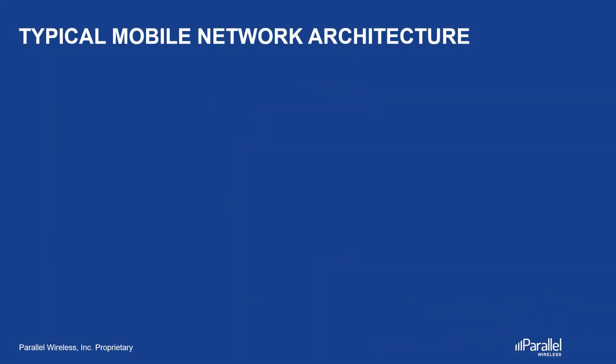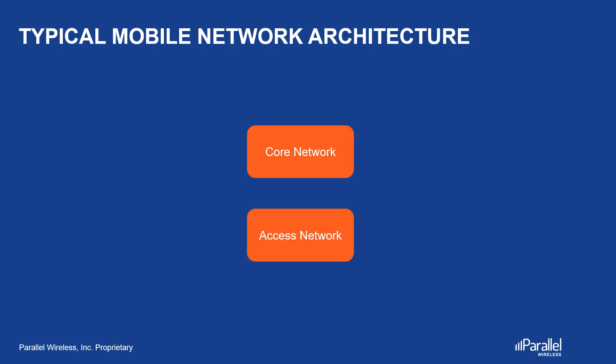Let's start by looking at a typical mobile network architecture. You have a core network and an access network. In between, they are connected by a transport network, which is also known as a backhaul. Then there is the air interface, and a device or user equipment, also called UE, that connects to the service provider's network.